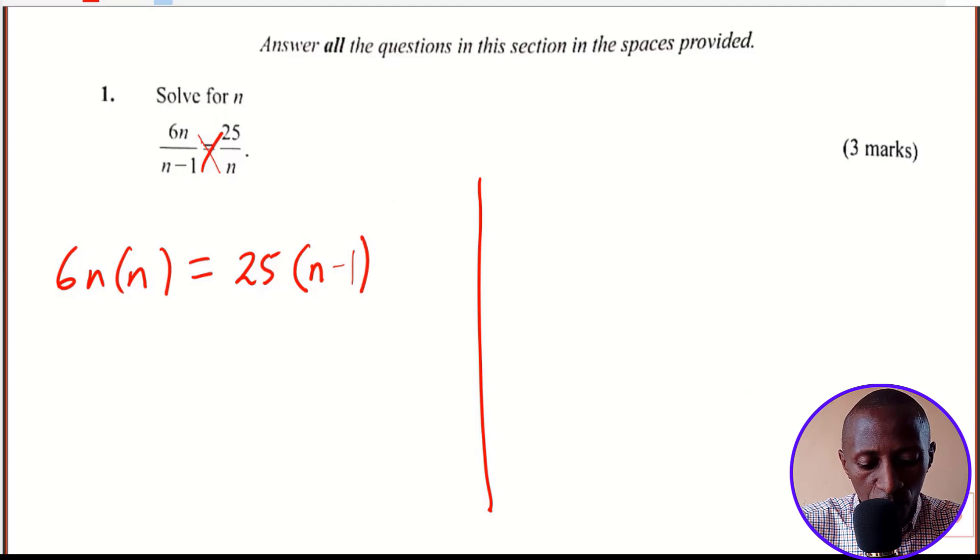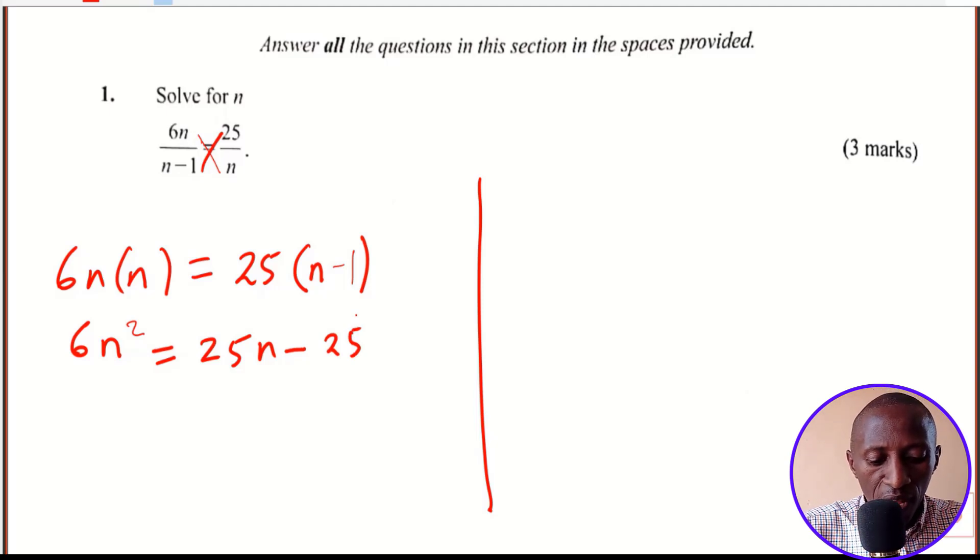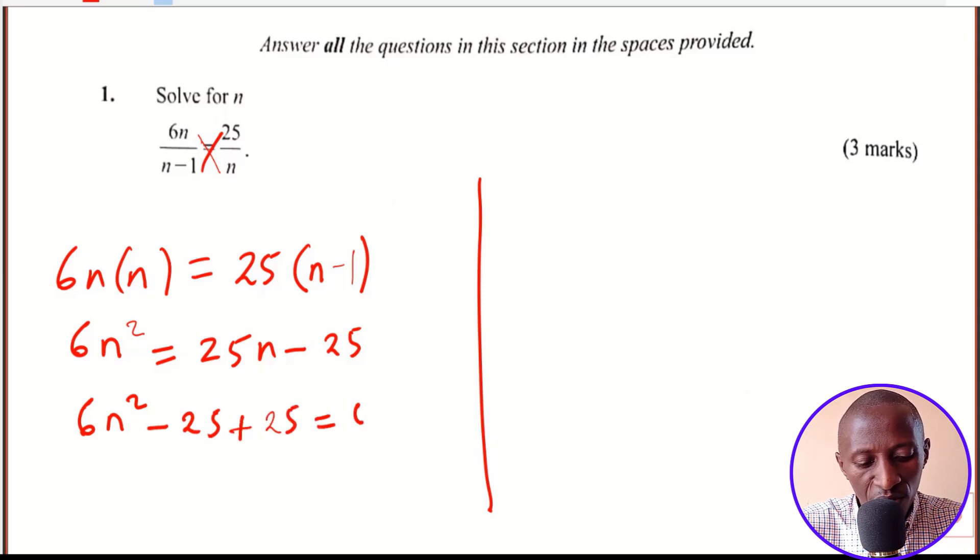Second step, we open up the brackets. That will give us 6n squared is equal to 25n minus 25. We put the terms on one side so that we develop a proper quadratic equation, and that gives us 6n squared minus 25n plus 25 is equal to 0.